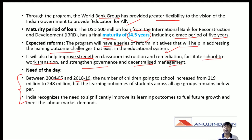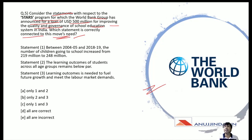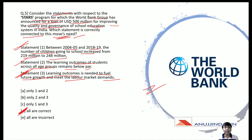Regarding the need for this program: between 2004-05 and 2018-19, the number of children going to school increased from 219 million to 248 million, but the learning outcomes across all age groups remain below par. India recognizes the need to significantly improve its learning outcomes to fuel future growth and meet labor market demands. All three statements are correct — Statement 1, 2, and 3 — so the correct answer is Option D: all are correct.